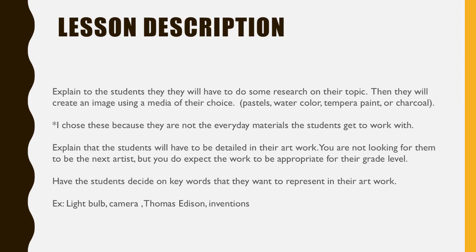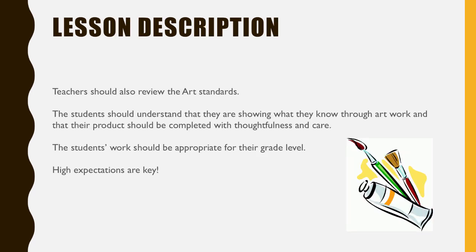Then you want to let the students know that you want them to be detailed in their artwork. You're not looking for them to be an artist, but you want their work to be appropriate. And as they're doing their research, they should find keywords they would like to incorporate into their artwork. So for example, since I'm doing Thomas Edison, I want a light bulb, a camera, a picture of Thomas Edison, and then maybe the word 'inventions.' You're going to review the art standard so students understand the purpose for incorporating art into social studies. Since art is an important part of this lesson, students need to be thoughtful about what they create, and the work should be appropriate. Give those students high expectations so they understand they need to take their time and put effort into their artwork.